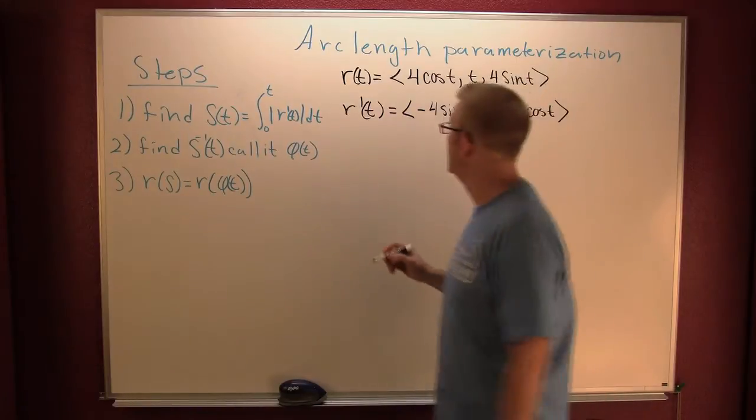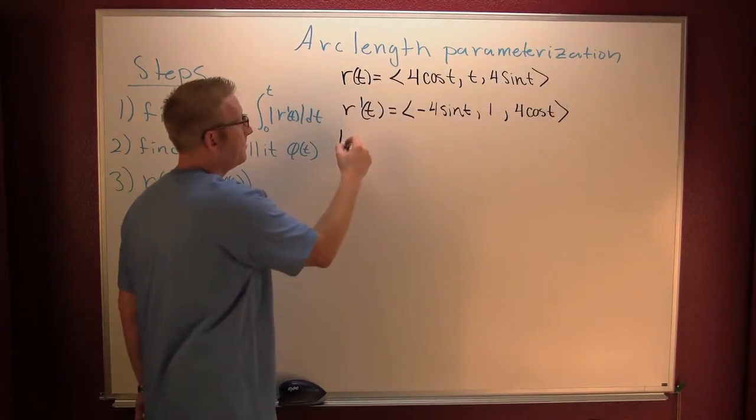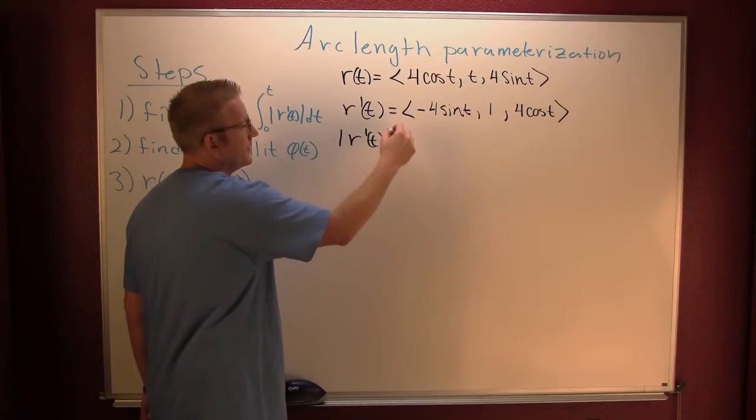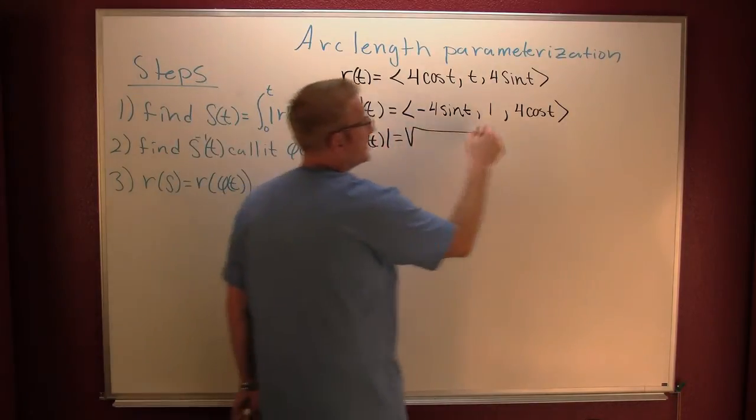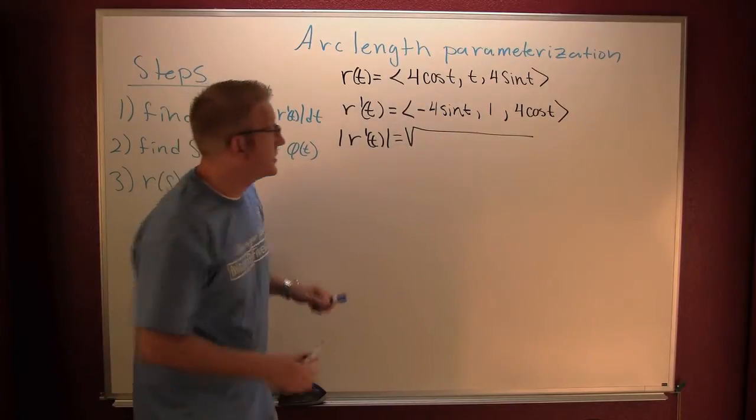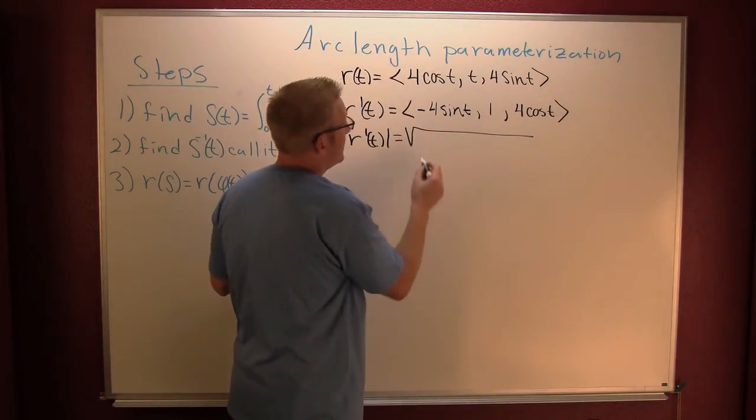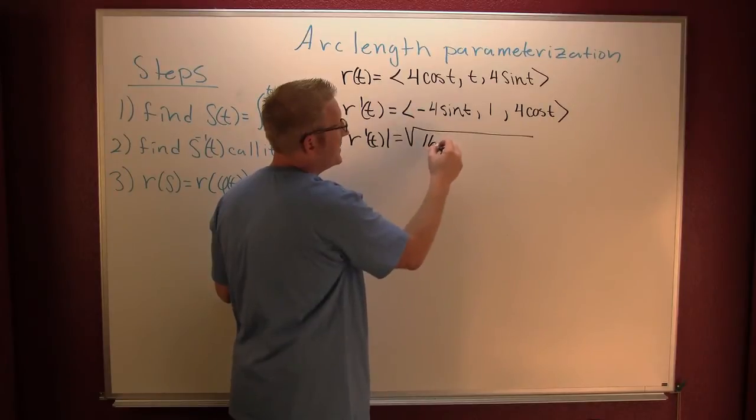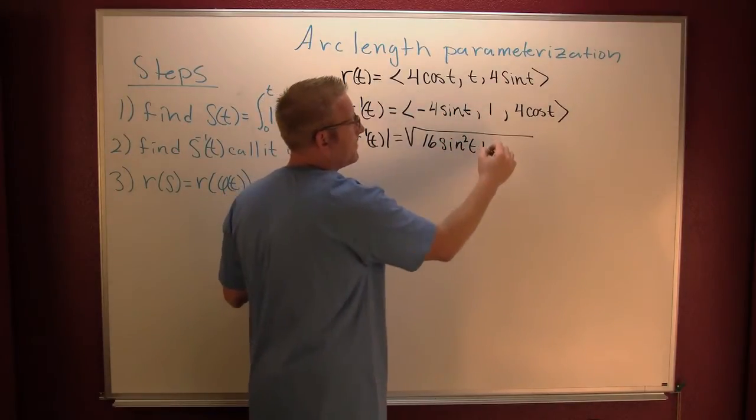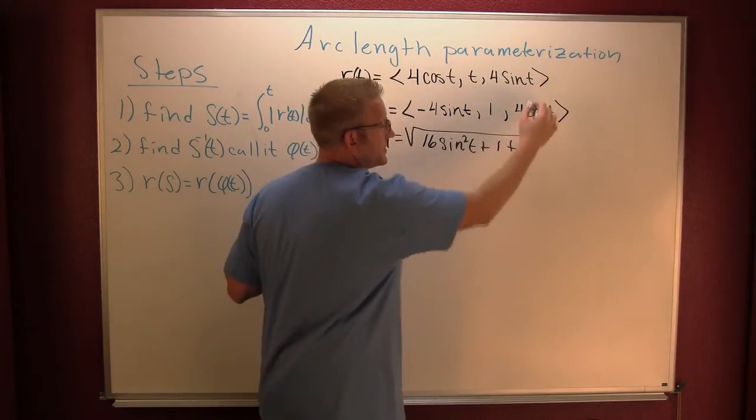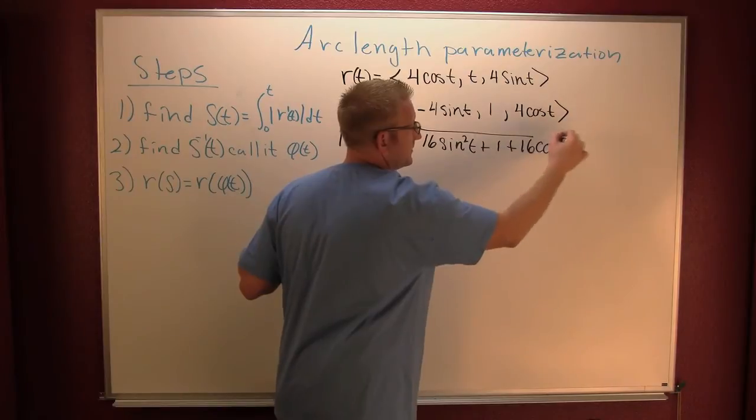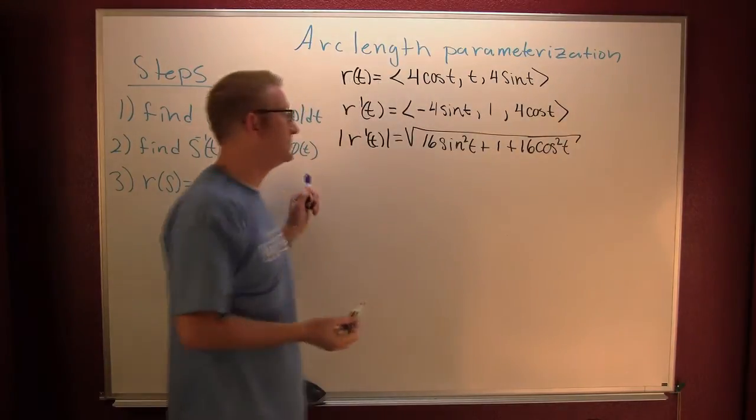Very nice! So now we're gonna want to find that magnitude of it. So then the magnitude of R'(T), that just so happens to be the square root of, now I want to square each one of those components. This guy, this is gonna be 16 sine squared T plus 1 plus 16 cosine squared T.